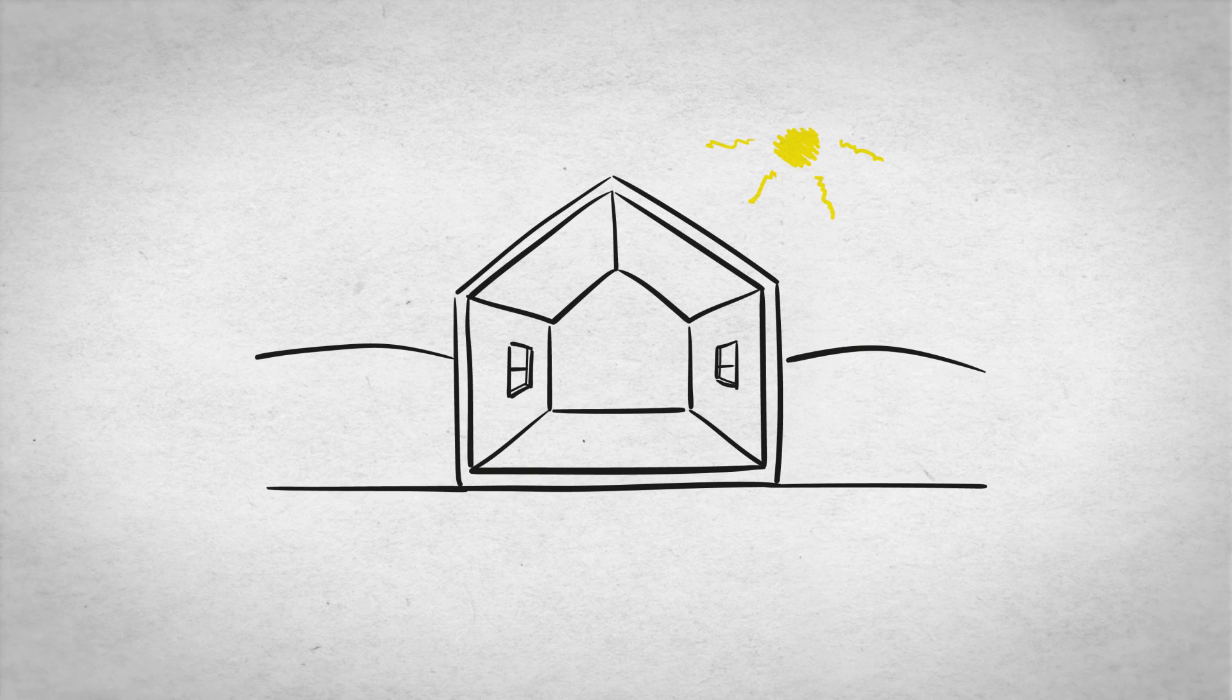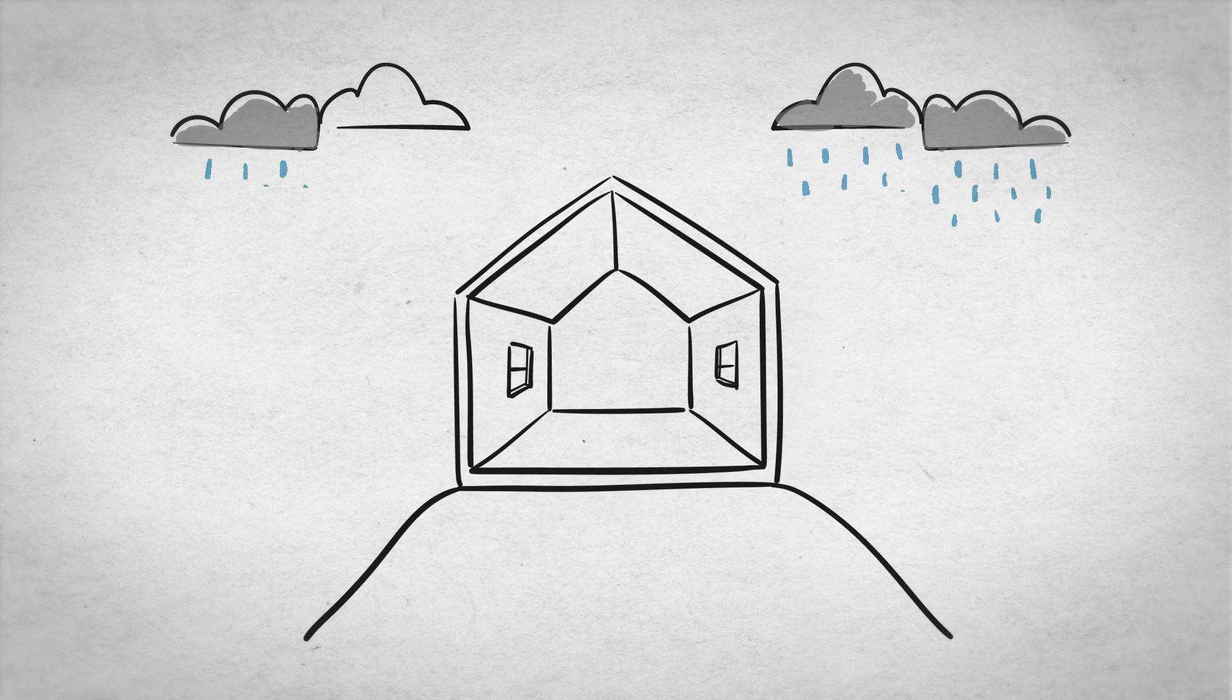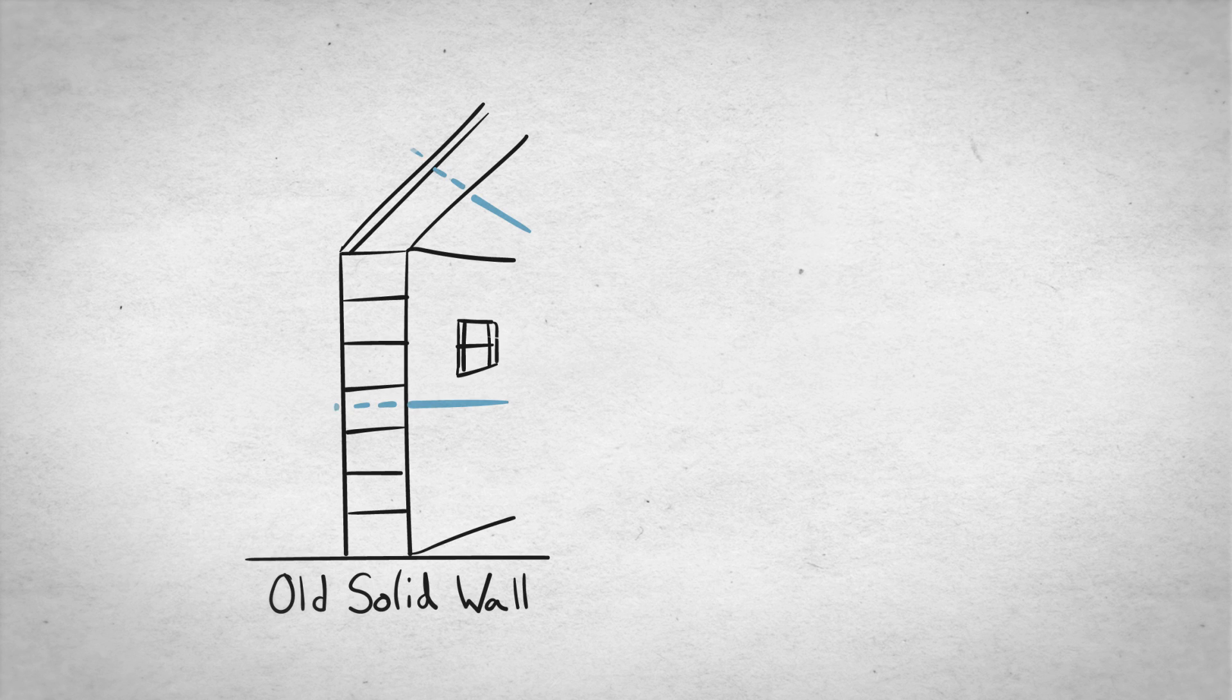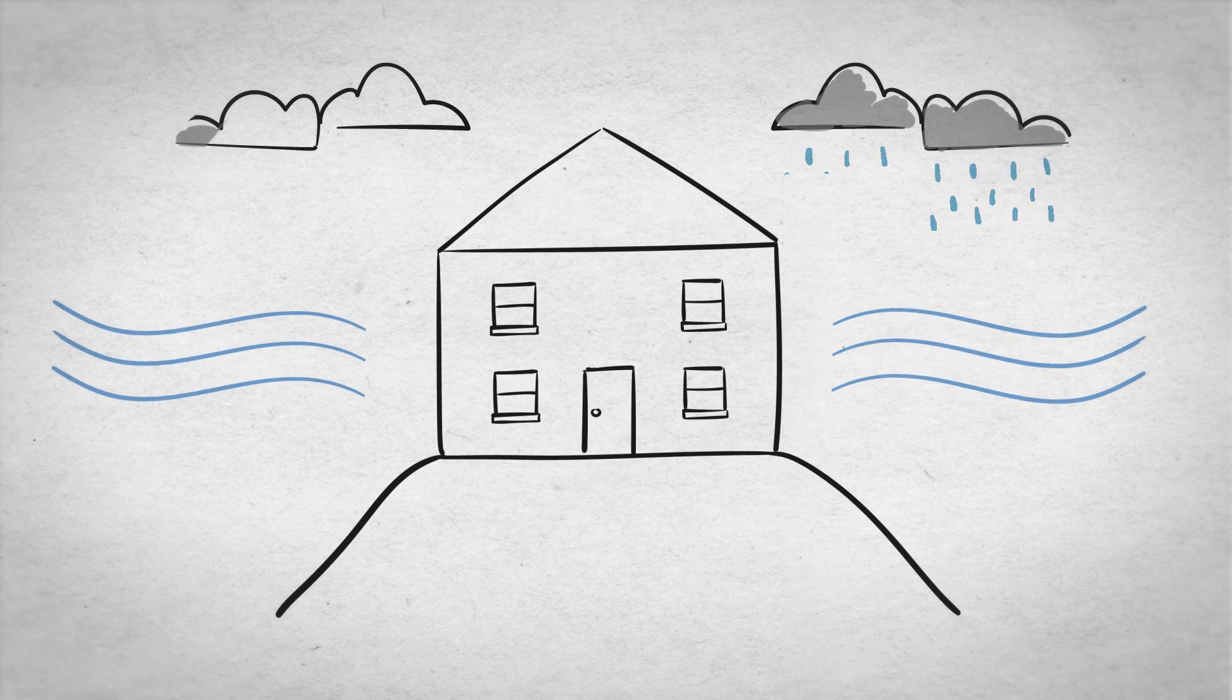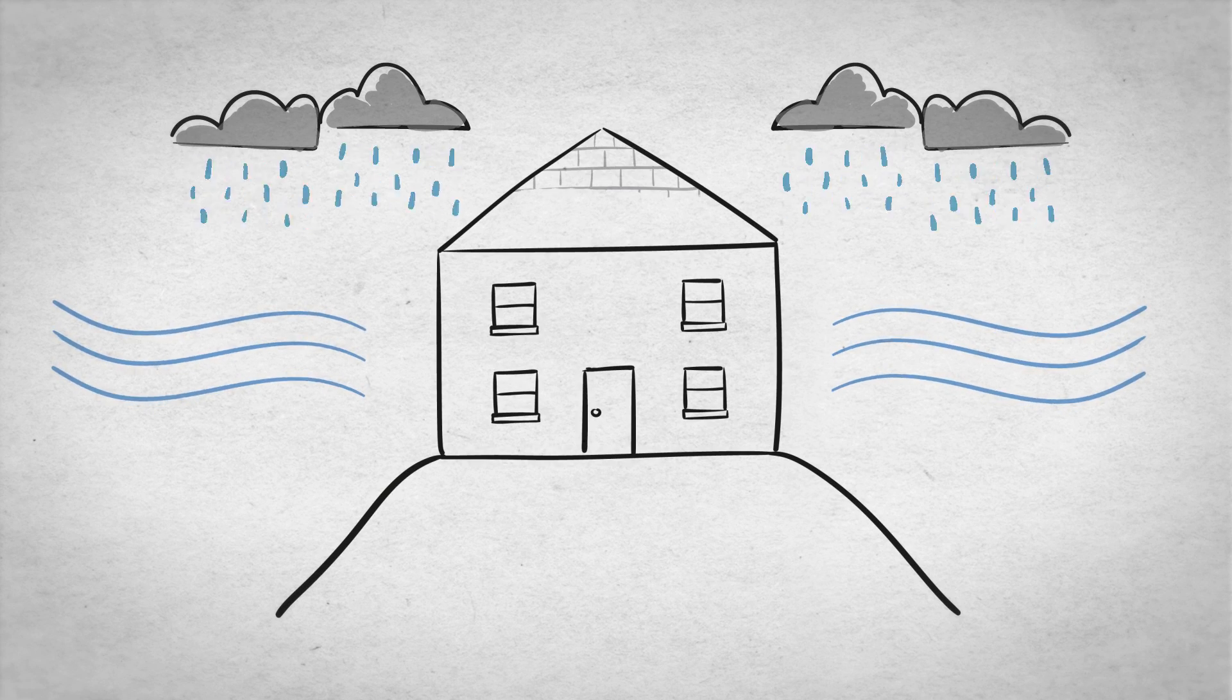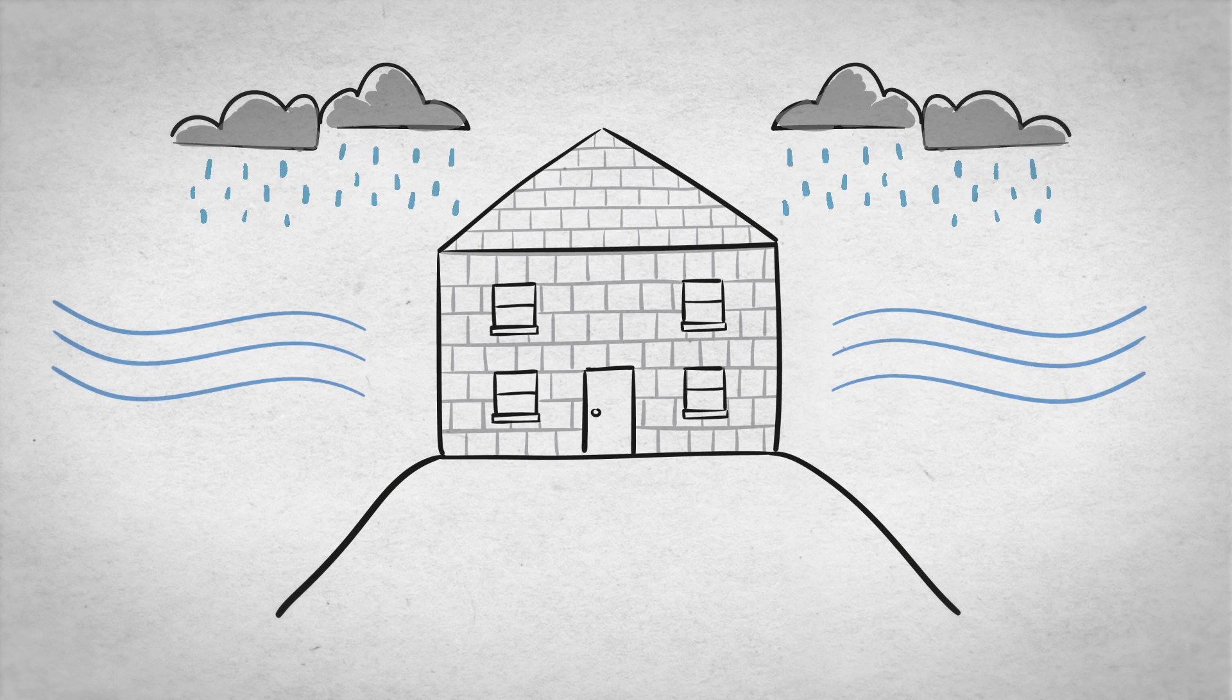Different types of building in different locations need different approaches in order to maintain balance. Older buildings deal with moisture in a different way to newer ones, so require a different approach when renovations or changes are made. Buildings in windy, wet places often have different kinds of materials and design. If we don't take these into account when we change things, we can end up creating more problems.